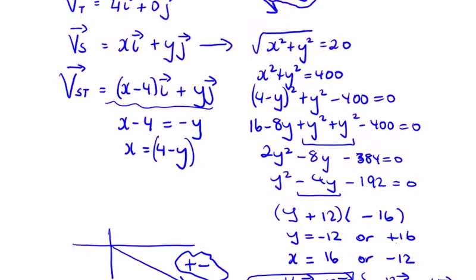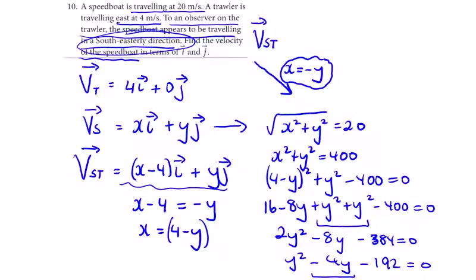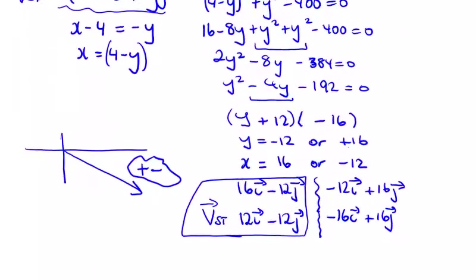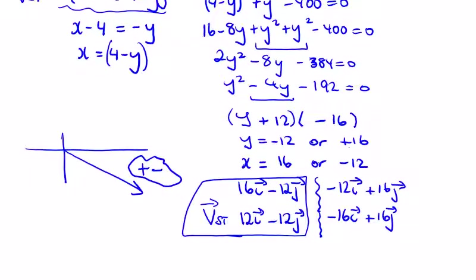For what they've asked us here, the velocity of the speedboat in terms of i and j. So my answer is the 16i, velocity of speedboat, 16i minus 12j.